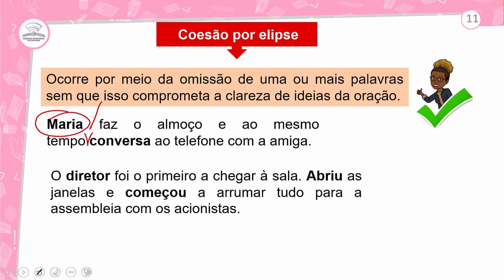Outro exemplo de coesão por elipse: 'O diretor foi o primeiro a chegar à sala, abriu as janelas e começou a arrumar tudo para a assembleia com os acionistas.' Quem foi o primeiro a chegar? O diretor. Quem abriu as janelas? O diretor. Quem começou a arrumar tudo? O diretor. Não comprometeu a clareza do texto — isso é coesão por elipse.